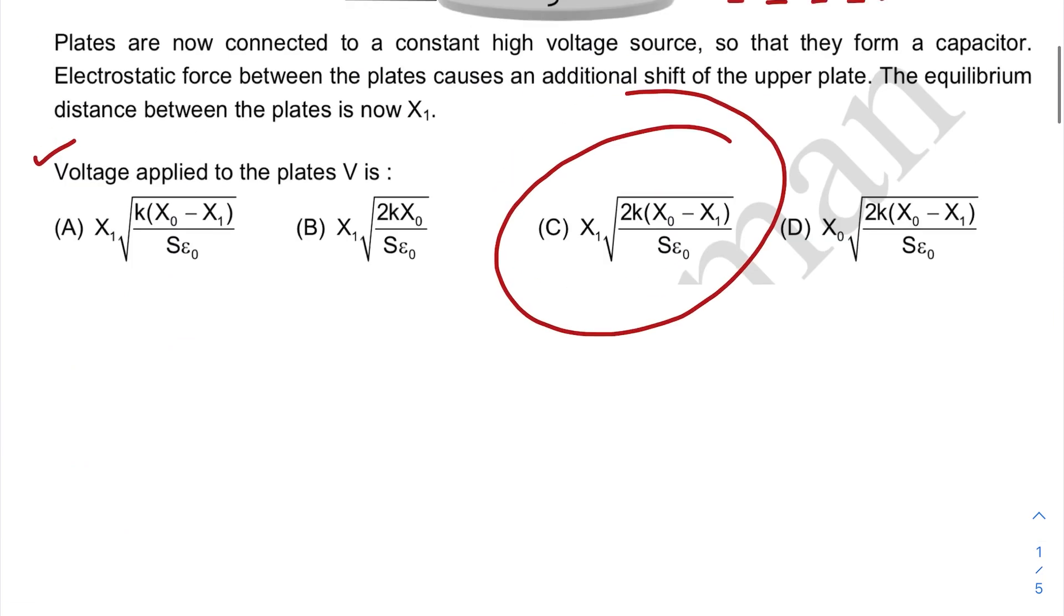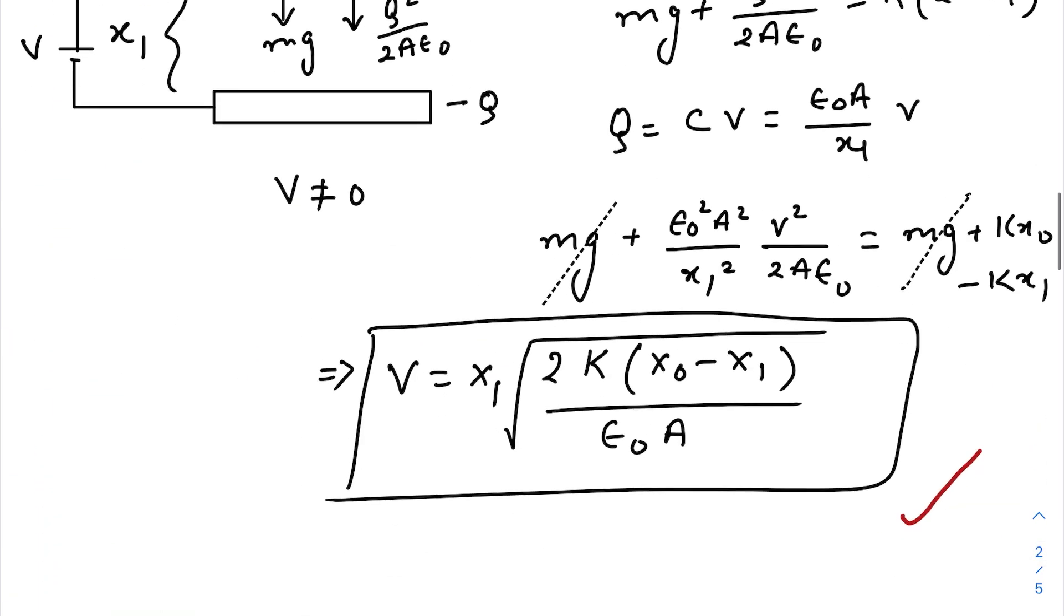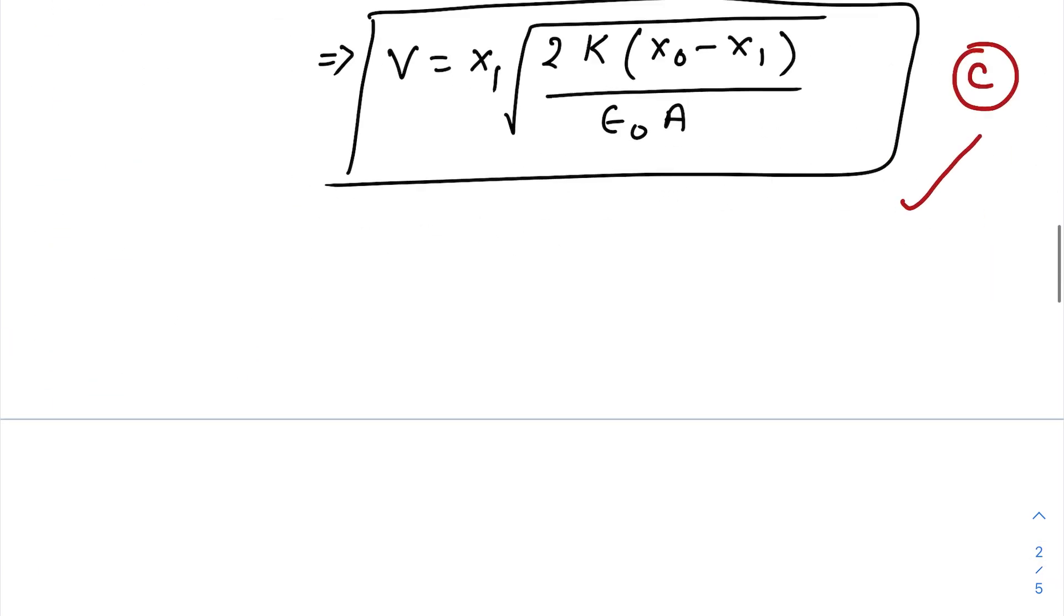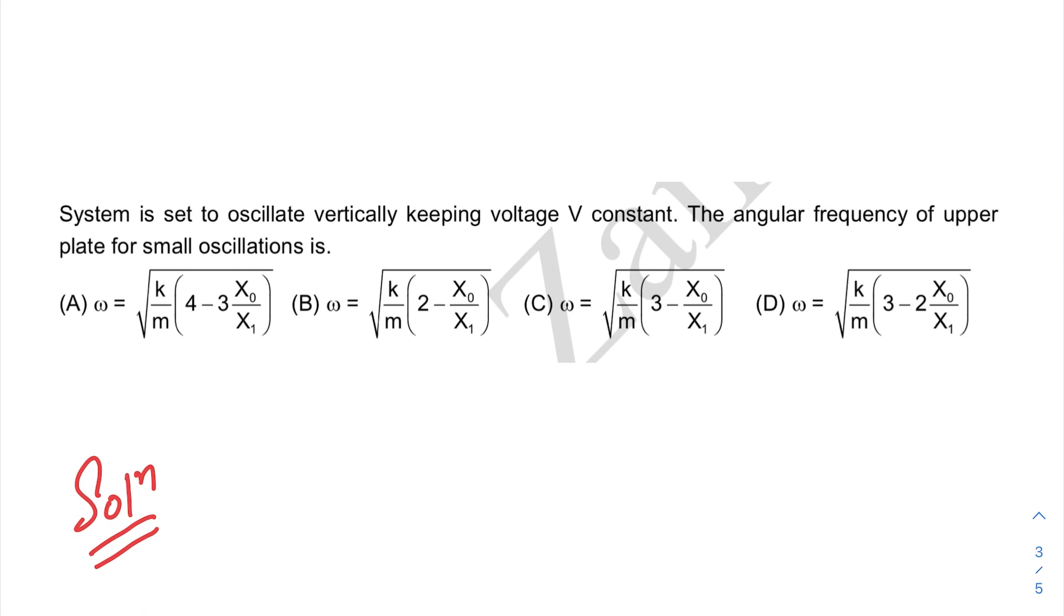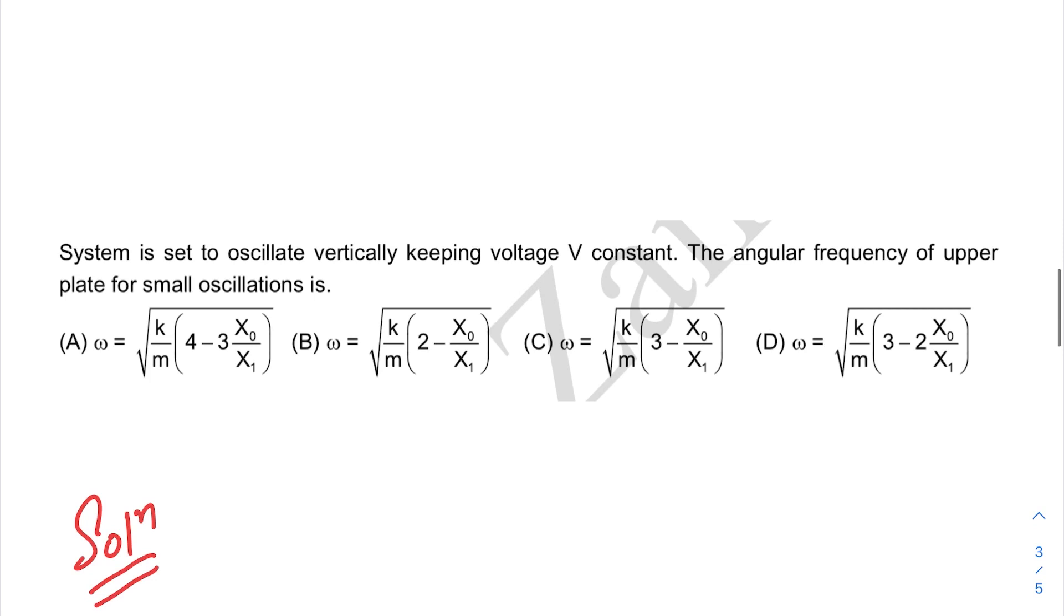Let us go to our next question. Now this question is the important one because as we have seen in our previous year questions, JEE asks a lot from simple harmonic motion and electrostatics combined. So now see here, system is set to oscillate vertically keeping voltage V constant. The angular frequency of the upper plate for small oscillation is...